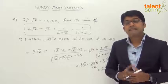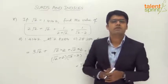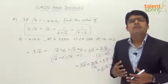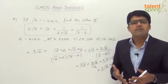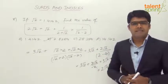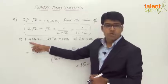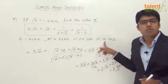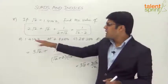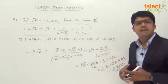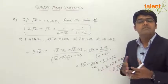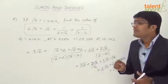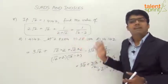Before moving ahead, let us understand another interesting way of answering this question: the method of approximations. When the answer options are not too close to each other, we can try an approximate calculation and find the best possible answer. Here the options are 1.4142, 2.8284, 28.284, and 14.142 — roughly 1.4, 2.8, 28, and 14 — clearly far apart, giving us liberty to use approximation.